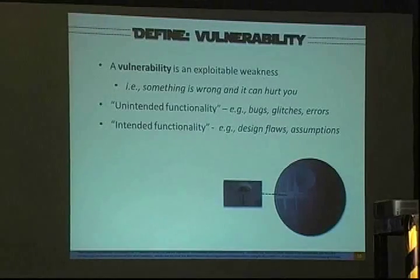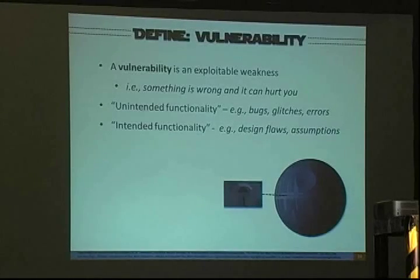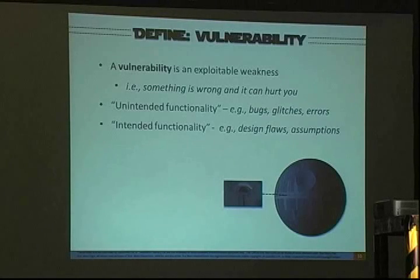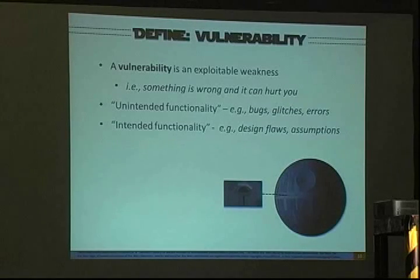Vulnerabilities: this is an exploitable weakness — something that's not supposed to be there and it can hurt you. This can come in the form of unintended functionality: bugs, glitches, errors — things that happen that you didn't expect or intend to happen. Or intended functionality, which covers design flaws and assumptions in the code, like 'it never occurred to me that they could use that portion of my application to hurt me.' These are still vulnerabilities whether it's a glitch or an error.